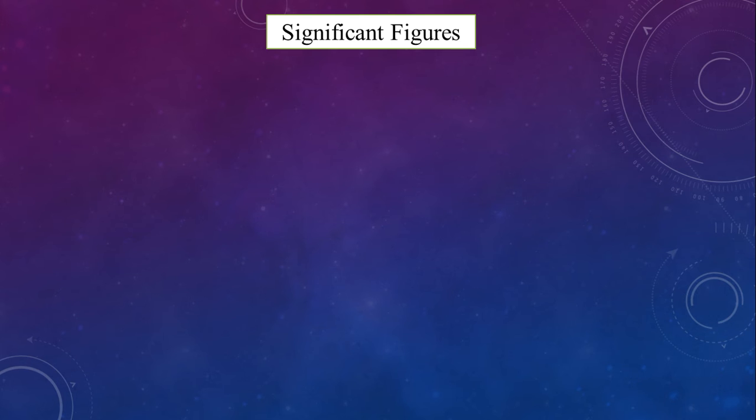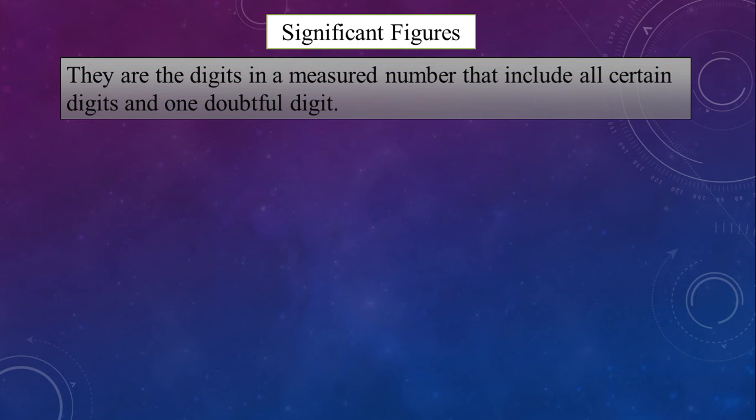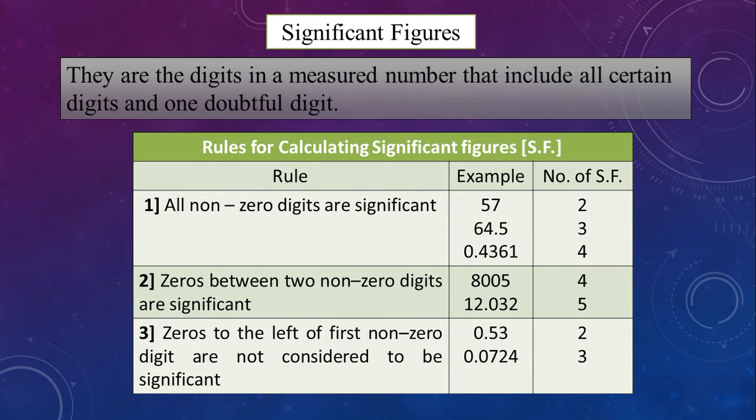We come to another concept of significant figures which we need to remember for our answers when we solve multiple choice questions. These are the digits in a number which include certain digits and one last doubtful digit. There are some rules we need to know for writing significant figures. Rule number 1. All non-zero digits are significant. For example, in a figure 57, the significant numbers are 5 and 7. So, it is 2. 64.5 significant digits are 6, 4 and 5. But when you compare, 0.4361, the significant figures are 4, 3, 6 and 1. And the 0 before decimal point is non-significant.